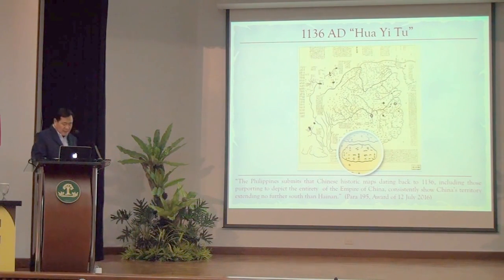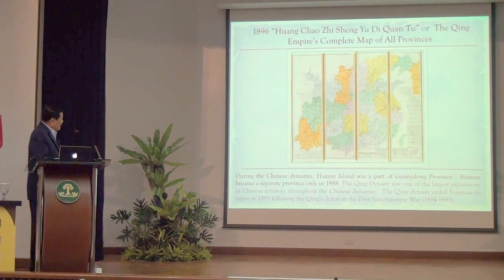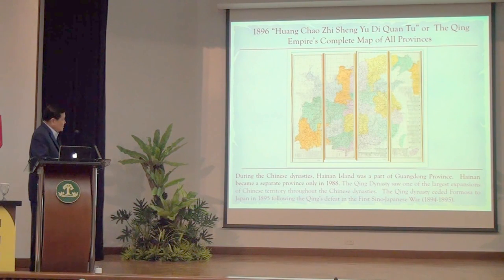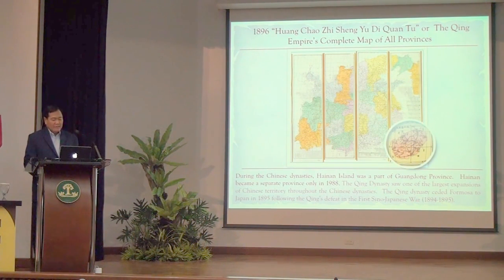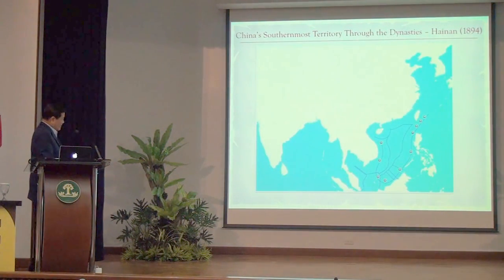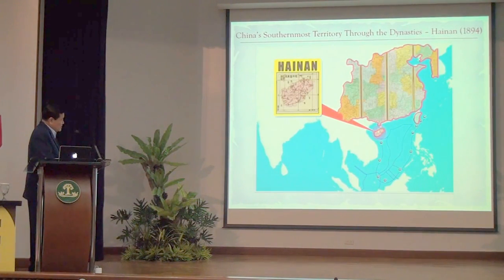The last official map of the Qing dynasty — 'The Qing Empire's Complete Map of All Provinces' — shows Hainan as the southernmost territory of China. You don't see the Paracels, you don't see the Spratlys, you don't see Scarborough. If you superimpose those dynasty maps on the map of Asia, you see that the southernmost territory of China never reached the Paracels, never reached the Spratlys, never reached Scarborough.